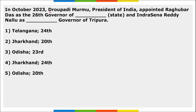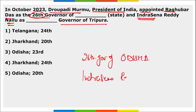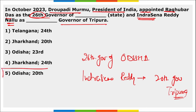Next, President Draupadi Murmu appointed Raghubar Das as the 26th Governor of Odisha, and Indra Sena Reddy Nallu as the 20th Governor of Tripura.